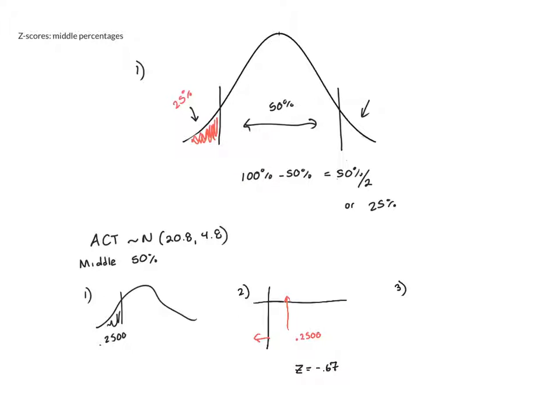This means when I go to do step three, I go ahead and say x = x̄ + z × s, which will give me 20.8 + (-0.67) × 4.8. And rounding this to two decimal places, I get 17.58. Now there's a little bit of a problem with this answer, and that is I want the middle 50% scores, and what I just found is that the lower end is 17.58.